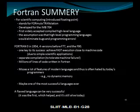FORTRAN went through four versions before F77 and F90. One key to its success was achieving fast execution close to machine code, due to simple scientific applications, along with separate compilation.